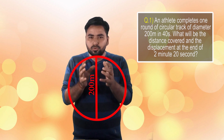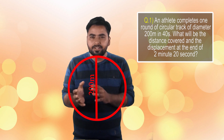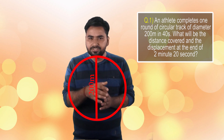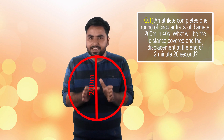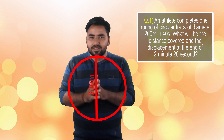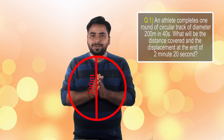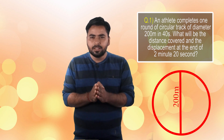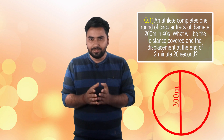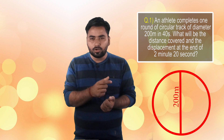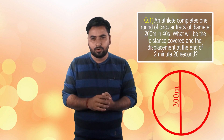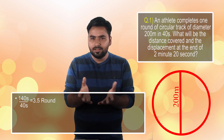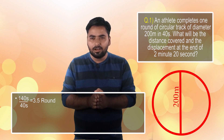We are asked that if the total time is 2 minutes 20 seconds, that is 140 seconds. So what we will do is, the number of rounds equals total time divided by time required for one round, that is 140 divided by 40, which is 3.5 rounds.